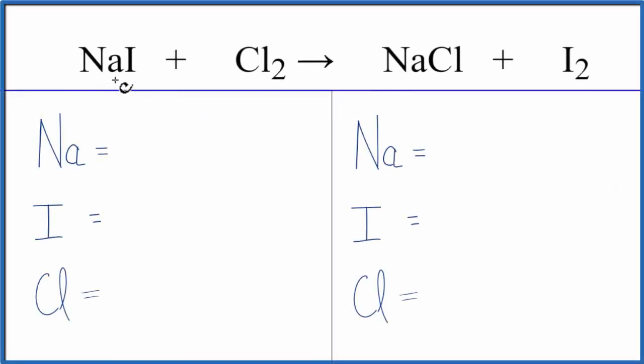To balance the equation NaI plus Cl2, let's add the atoms up on each side of the equation. We have one sodium, one iodine, and two chlorine atoms.